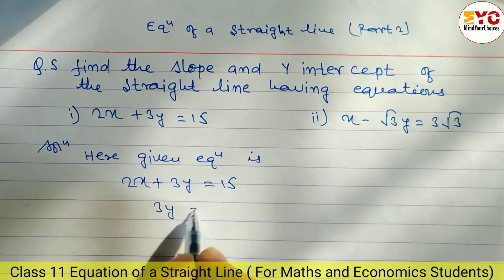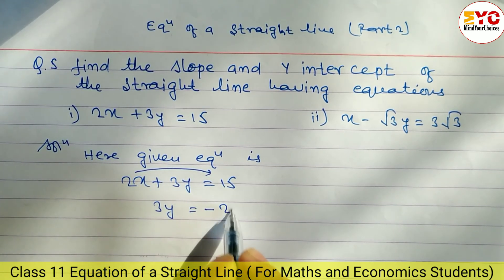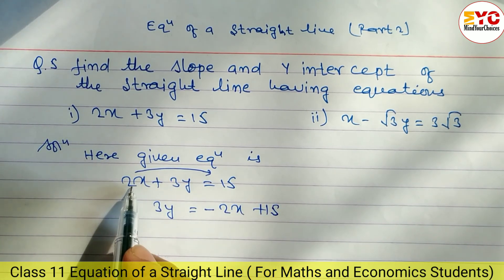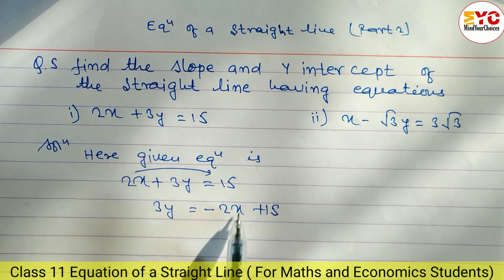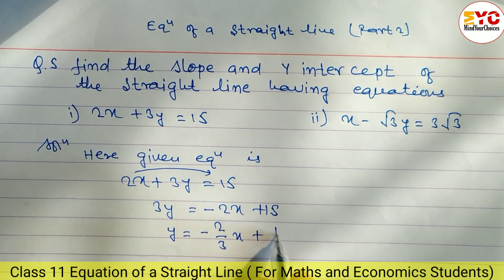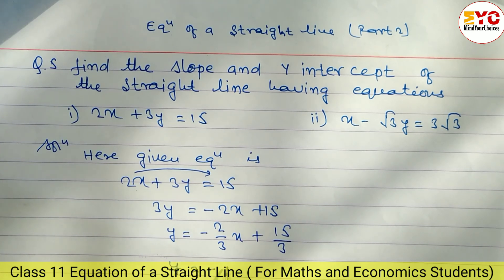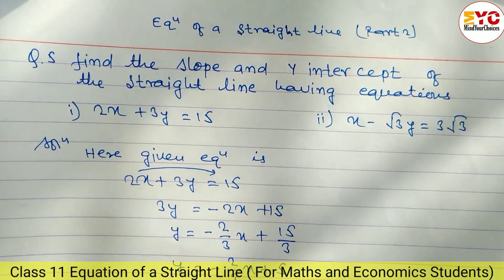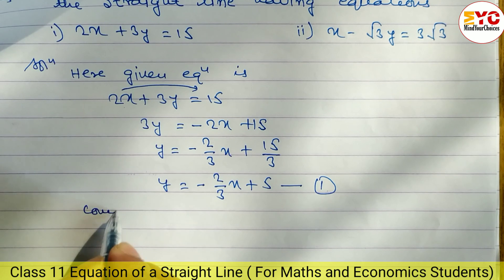So 3y = -2x + 15. When you change the places we have to change the sign also — this 2x is positive, when you take it to the right side we write minus 2x. Then y = (-2/3)x + 15/3, which gives y = (-2/3)x + 5.